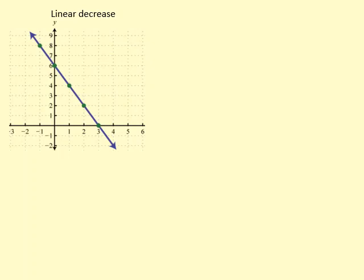This is an example of a linear decrease, because every time you increase the x value by a given amount, the y value decreases by the same amount. For example, here, every time you go up by 1 in the x-axis, you go down by 2 in the y-axis, so it's decreasing by the same amount.